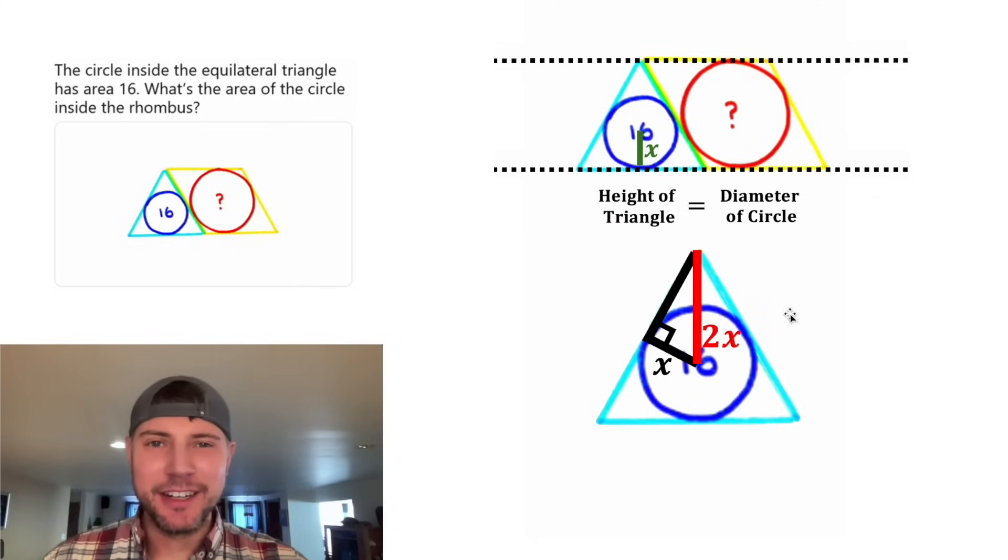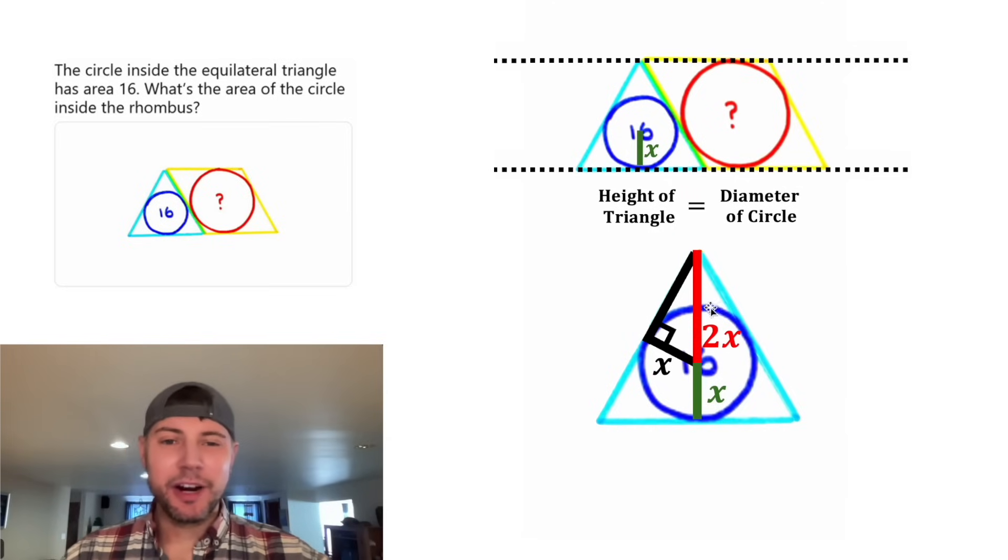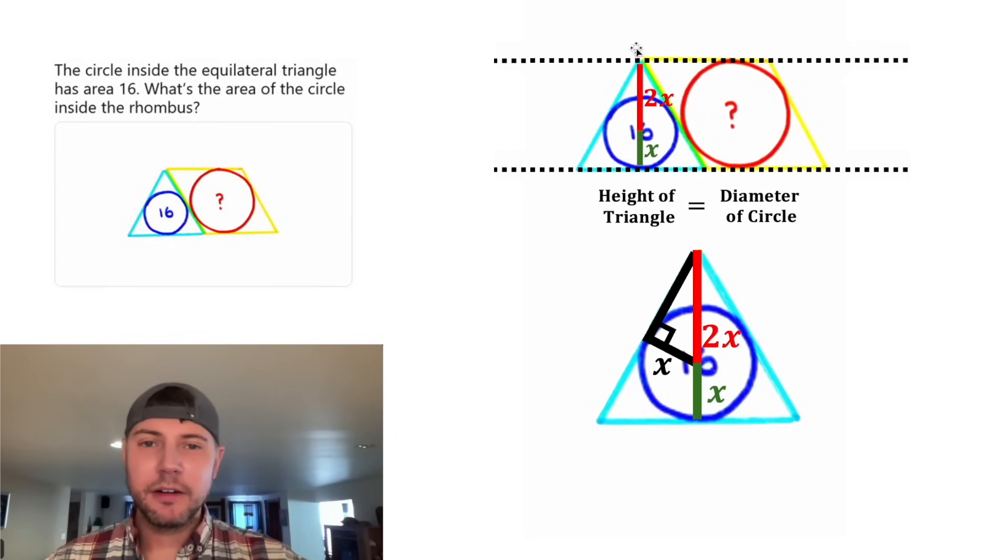And now we're done with the 30-60-90 notes. Let's take this x radius that we have here and copy it down here. So we can see the whole height of the triangle is x plus 2x, or 3x. Let's take this 2x length and copy it up here. Now let's draw the diameter of the circle. This is going to be equal to this. And 2x plus x is 3x.